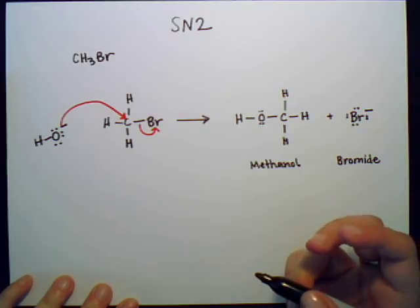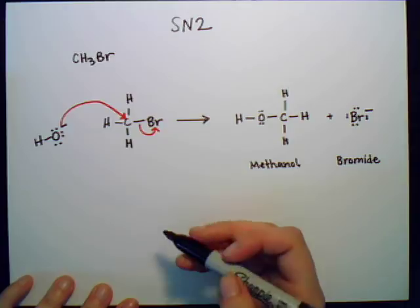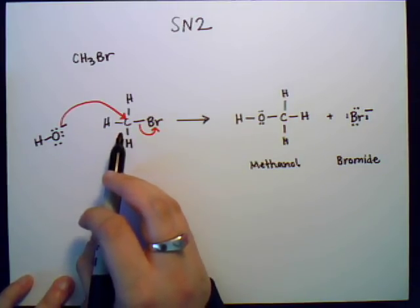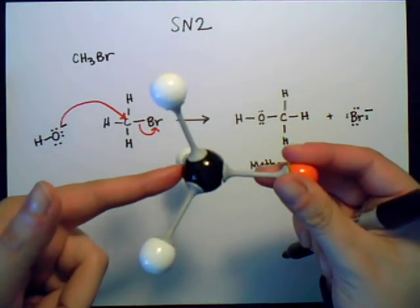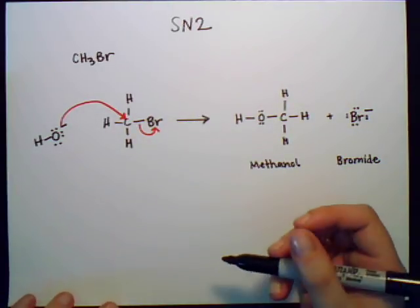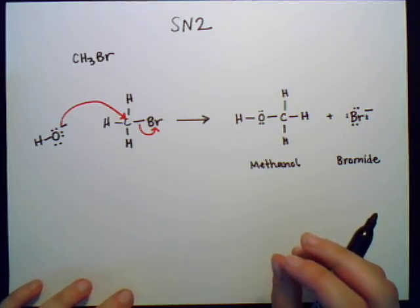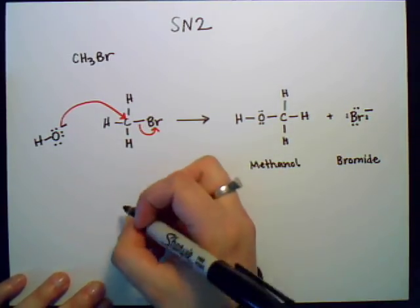So that you can understand what they mean by backside attack, I'm going to draw this with stereochemistry. Literally what they're saying is that this nucleophile is going to come in and attack the carbon from the backside, like I mentioned, and it's going to invert the stereochemistry, kind of like how an umbrella would get blown inside out by the wind.